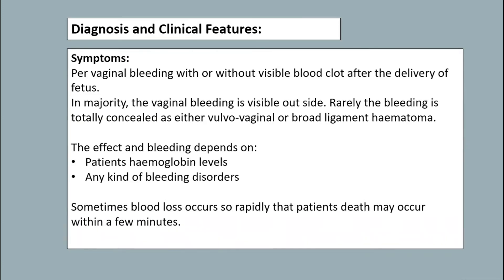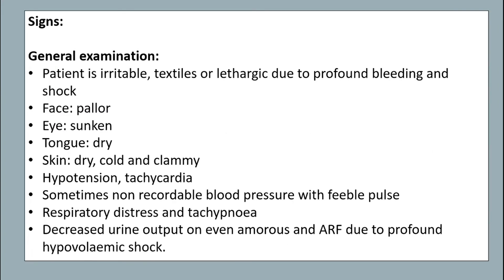Diagnosis and clinical features: symptoms include profuse vaginal bleeding with or without visible blood clots after the delivery of the fetus. In the majority the vaginal bleeding is visible outside; rarely the bleeding is totally concealed as either vulvo-vaginal or broad ligament hematoma. The effect of bleeding depends on the patient's hemoglobin level and any kind of bleeding disorders. Blood loss may occur so rapidly that the patient's death may occur within a few minutes.